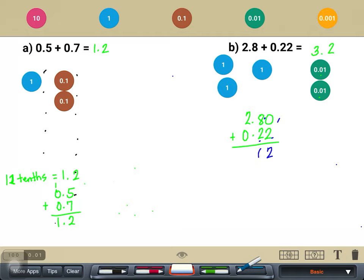So 10 tenths, that would be 0 here, and then regroup 1 whole right there. So 2 plus 1 would now give you 3. So our final answer would be 3 and 2 hundredths. And that's how you...